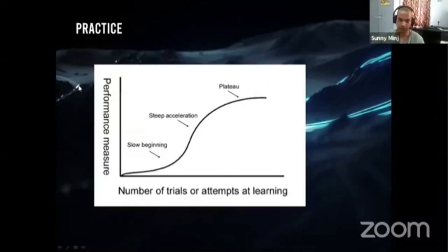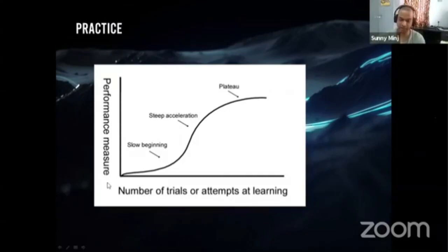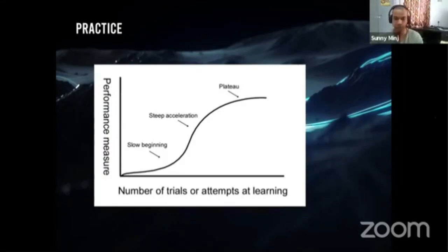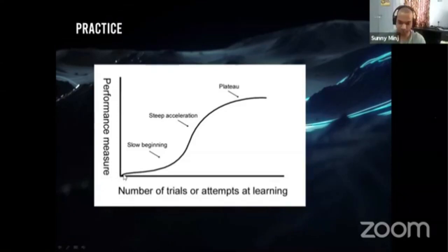Next is practice. This is a graph for performance versus number of trials in your journey. In the beginning it will be very slow — when you open the software you'll find so many buttons and get confused, not knowing where to start. You have to find key points from tutorials, like why they're pressing a certain button or using a specific tool.